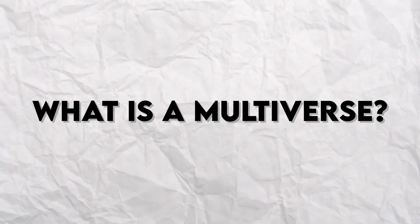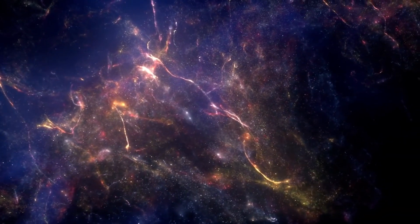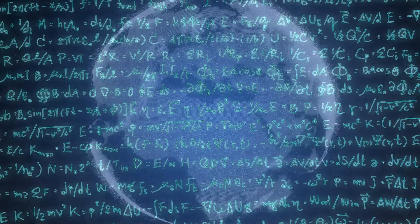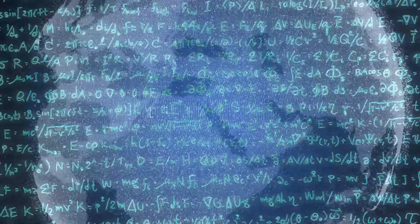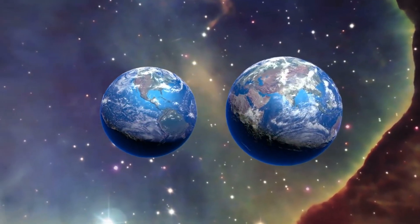What is a multiverse? The multiverse is an arrangement of multiple universes, which comprises everything from space, time, matter, energy, information, and the physical laws and constants that govern them. They are also referred to as parallel universes or alternative universes.